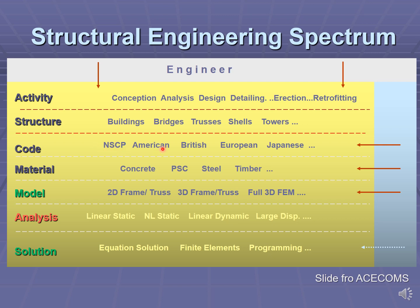The structural engineer is guided by a design code, using local codes like the NSCP and codes from other countries like the American Code, British Code, European, and Japanese Codes. The structural engineer uses various types of materials in designing structural members that create and build different types of structures. A structural engineer analyzes structures using structural models from simple two-dimensional frame truss models to more sophisticated three-dimensional finite element models.